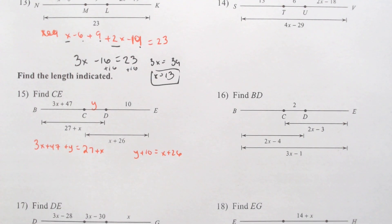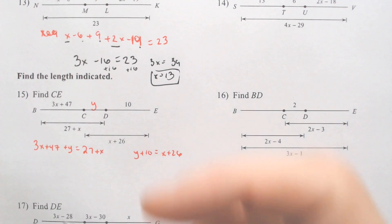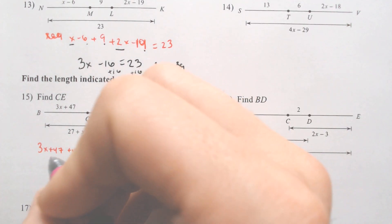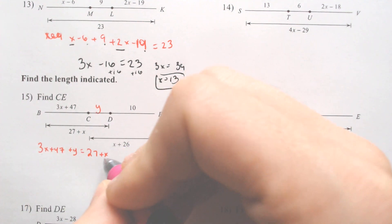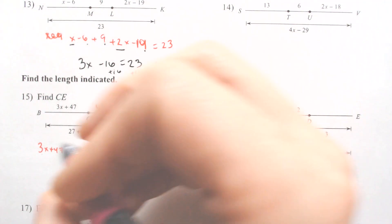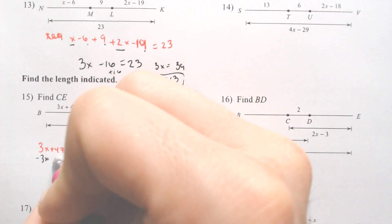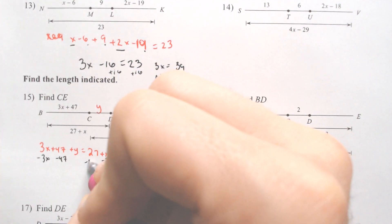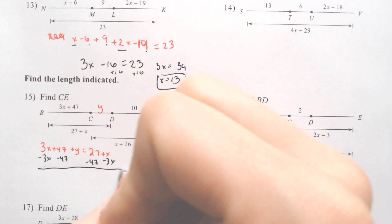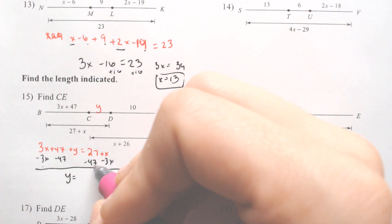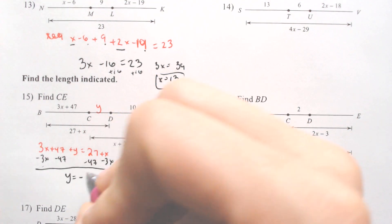In both of these cases, we got two variables, so we're going to have to go back into our Algebra 1 brains. But it is possible. We can either solve for X or solve for Y. I'm going to recommend solving for Y in this case. I'm going to move the 3X over, and I'm going to move the 47 over. So I'm going to subtract 3X and subtract 47. I'm doing two steps in one.